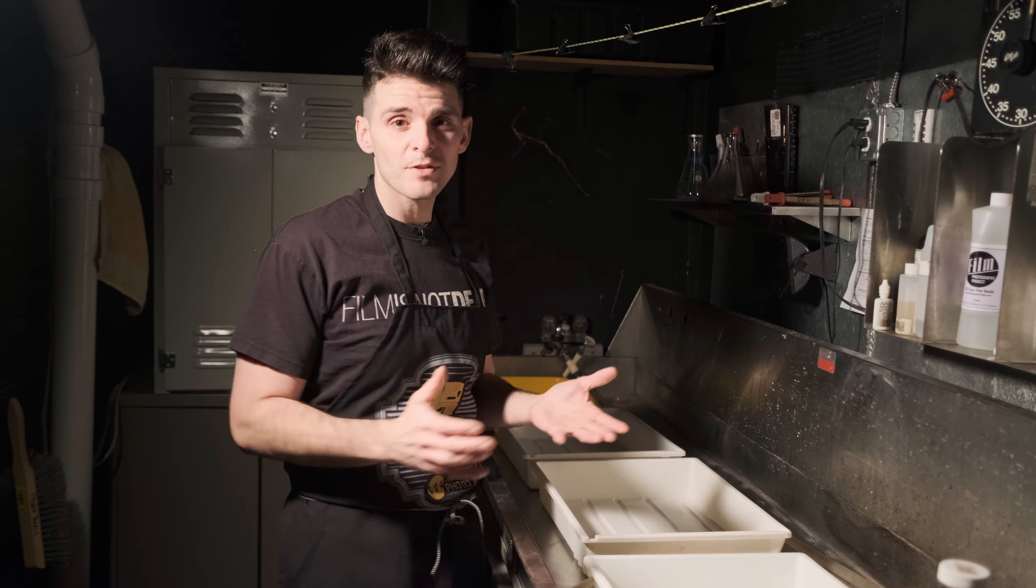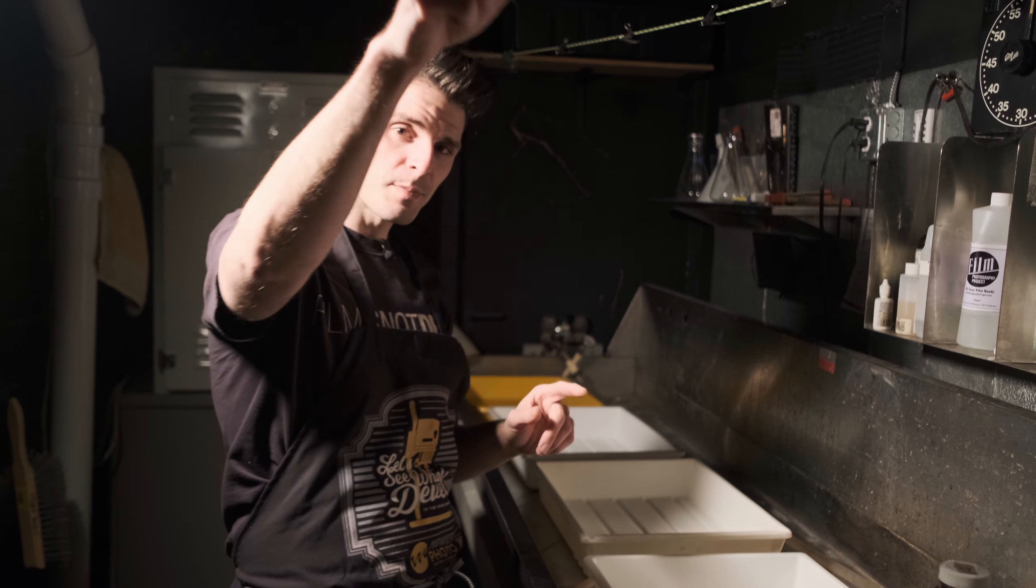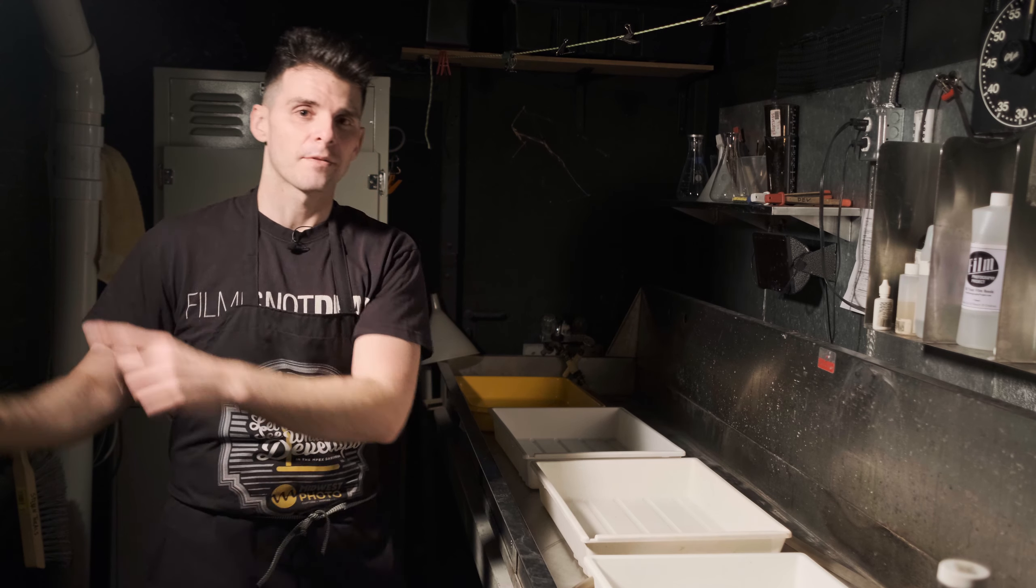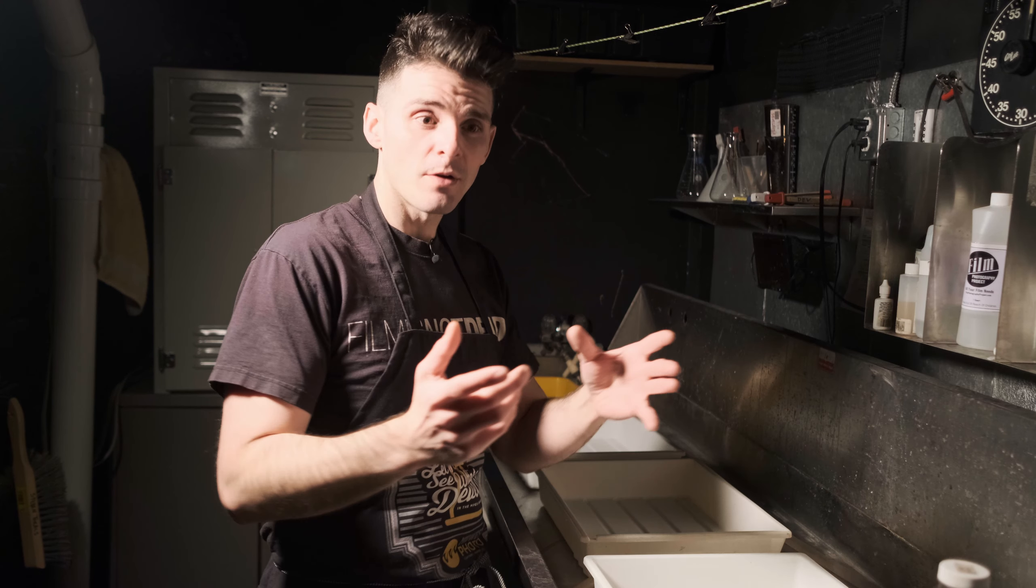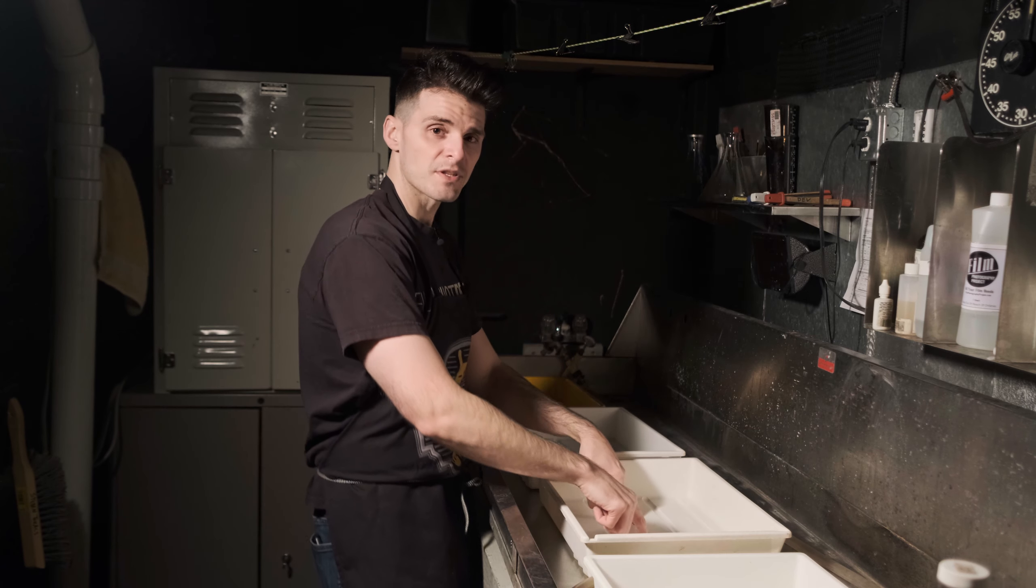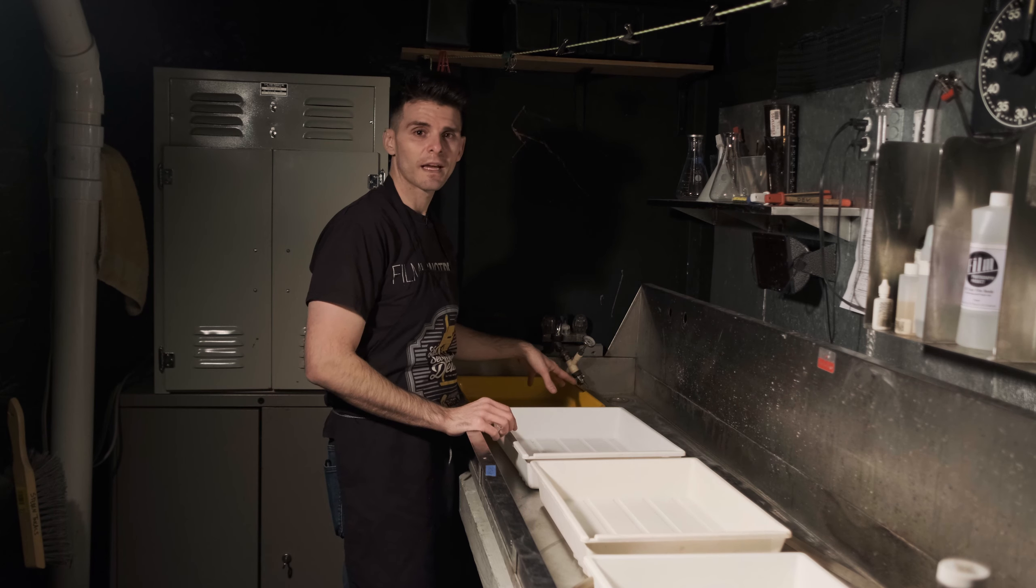So before we start printing, we're going to set up our trays just like we did last week. We're exposing over this way. We're going to process here in our wet zone and we're going to flow right out the door for drying. So we're going to go right from our exposure to our developer, stop bath, fix, and a rinse.